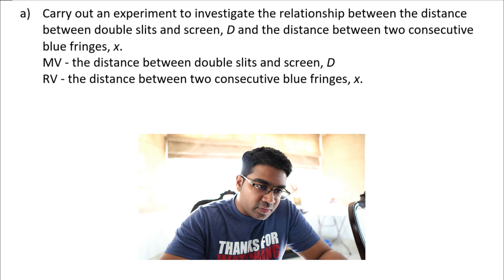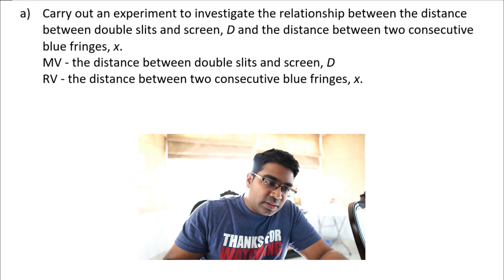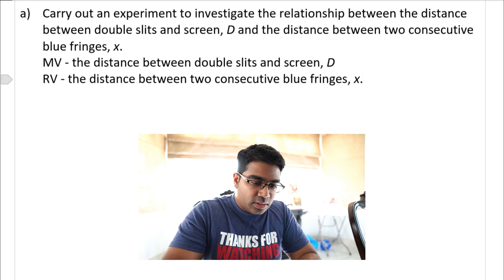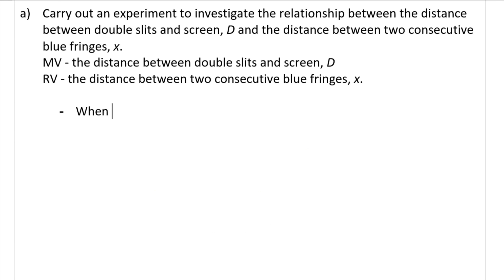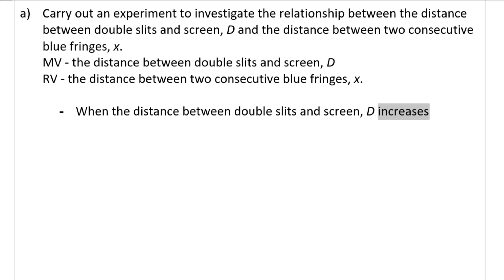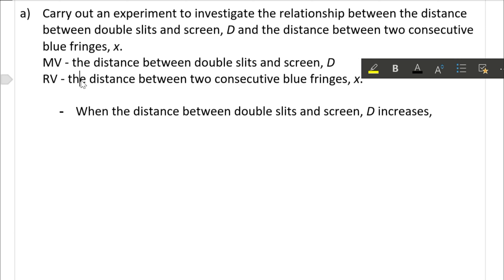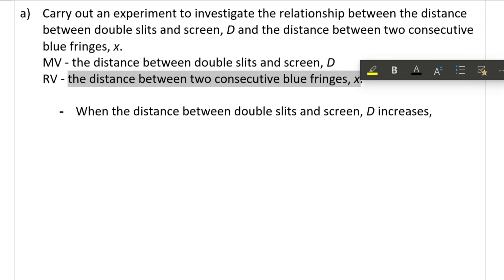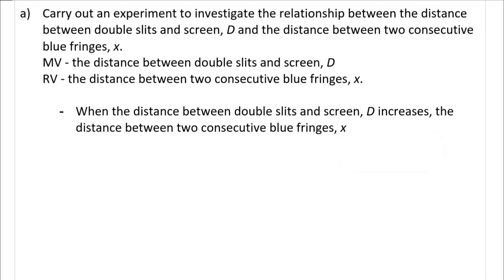Let's apply this to the physics example. Both the MV and RV are quantitative, so we say: 'When the distance between the double slits and screen D increases, the distance between two consecutive blue fringes X increases as well.' Since they are directly proportional — as you would know from theory — both increase together. That's the hypothesis — as simple as that.